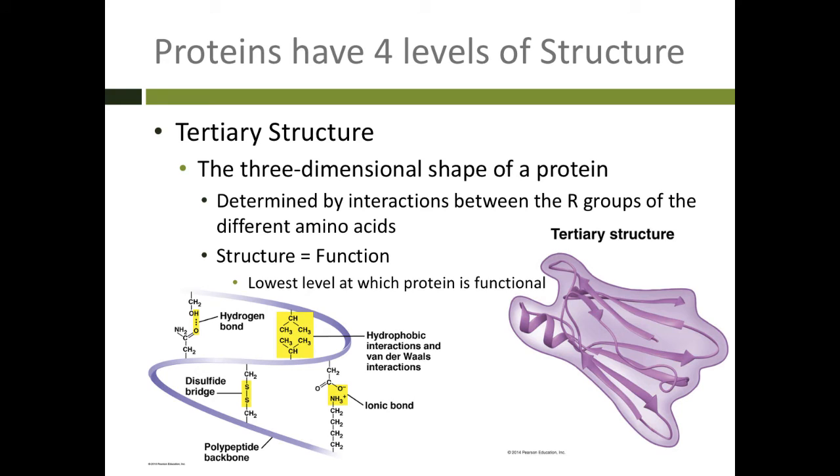The tertiary structure of a protein is really the three-dimensional shape of the protein. Imagine again your long bead necklace stretching from one side of your room to the other. The primary structure is the order of the colors of the beads. The secondary structure would be small foldings in different parts of the bead necklace. The tertiary structure is if you took the entire bead necklace and wadded it up so that you could hold it in your hand.